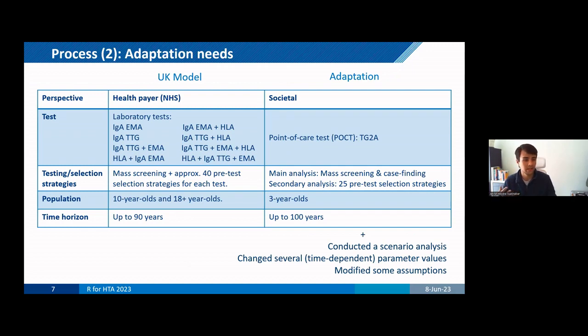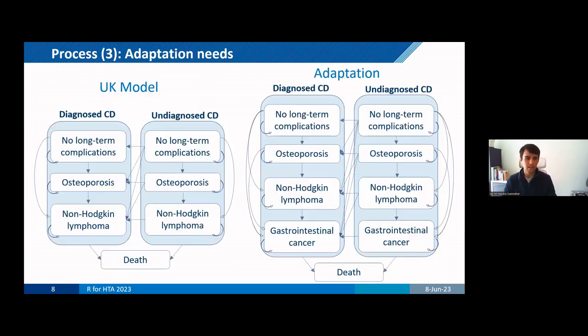Then in addition, we conducted a scenario analysis where we tried to address a limitation that was in both the UK model and our model. And finally, we really tried to change and add any parameters that would improve the model's relevance to the Dutch context. So this involved identifying any new data sources for several parameters or where possible, including more cycle specific parameters. And we also collected data from approximately 2,000 members of the Dutch Celiac Association.